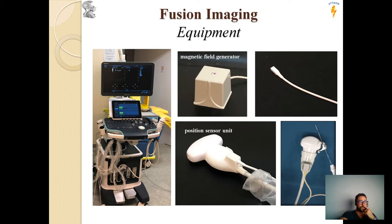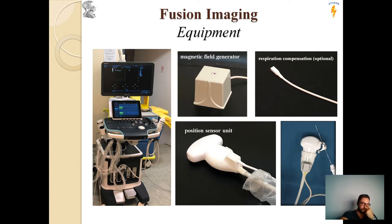As the ultrasound probe moves, the magnitude of the electric current in the position sensor changes with respect to the magnetic field. Another sensor is the respiratory compensation, which is optional and will be explained later. There is also the electromagnetic needle tracking, which creates a magnetic field that can visualize the tip of the needle.